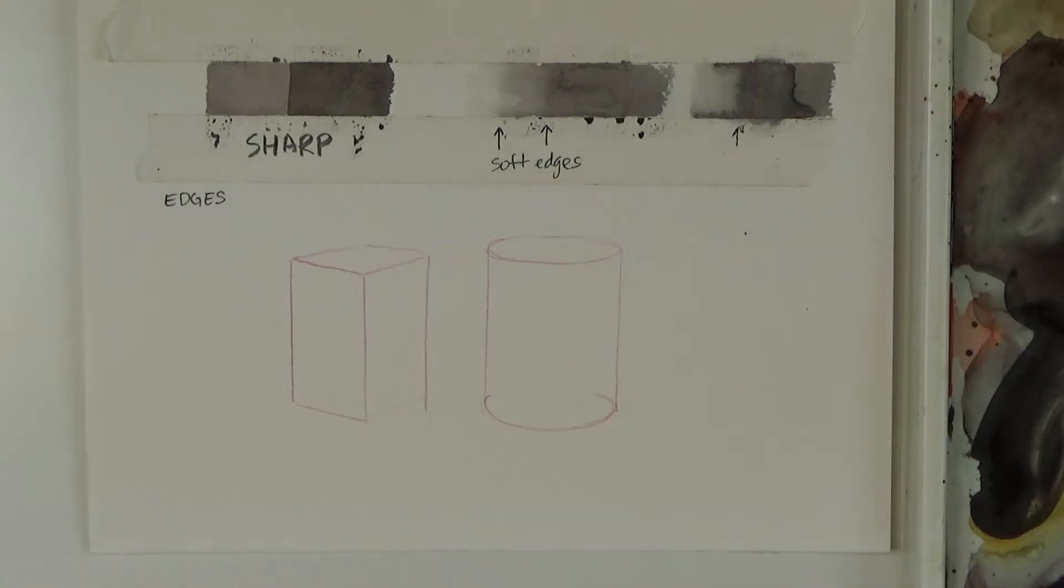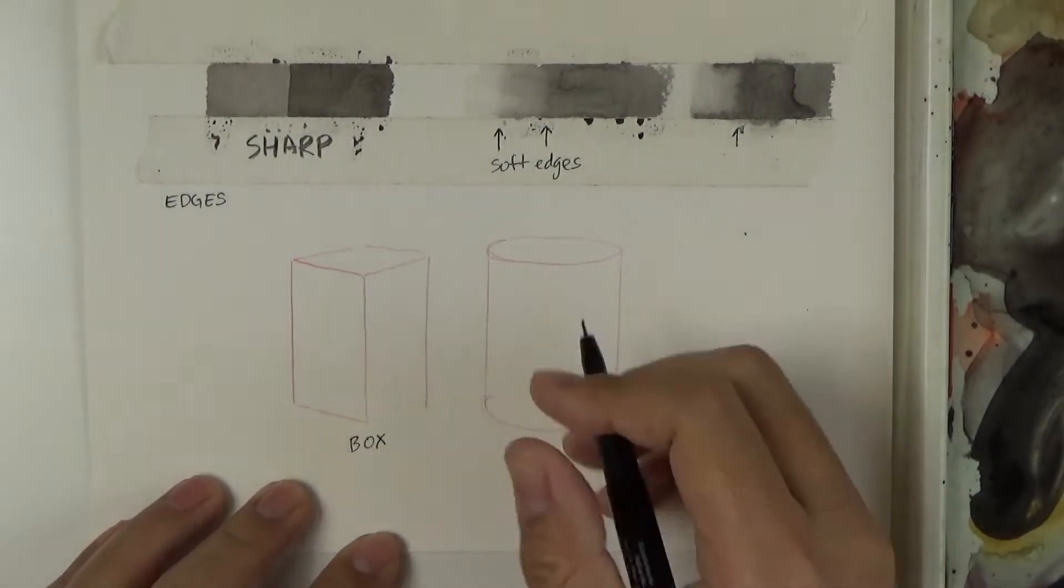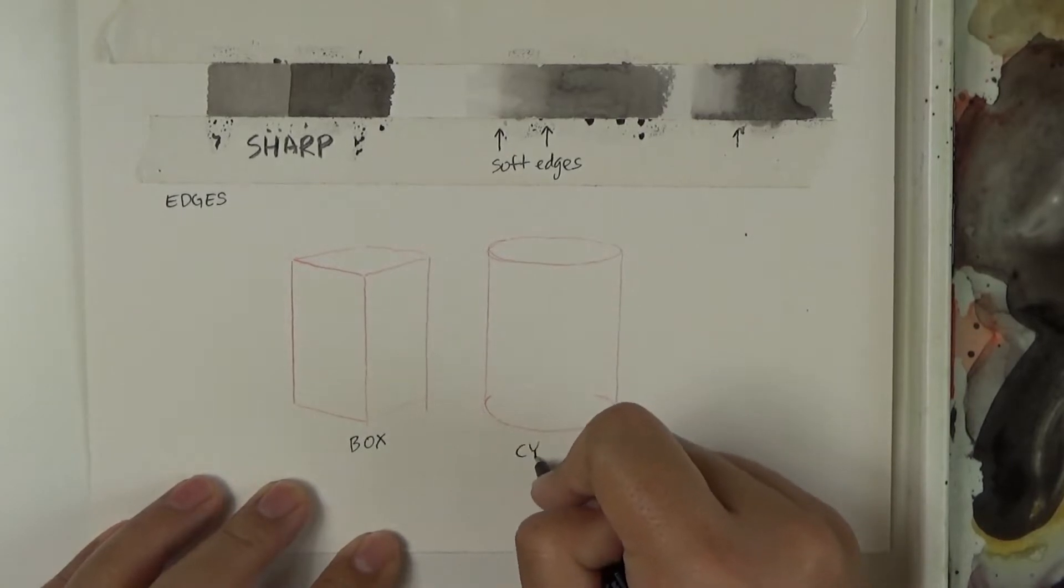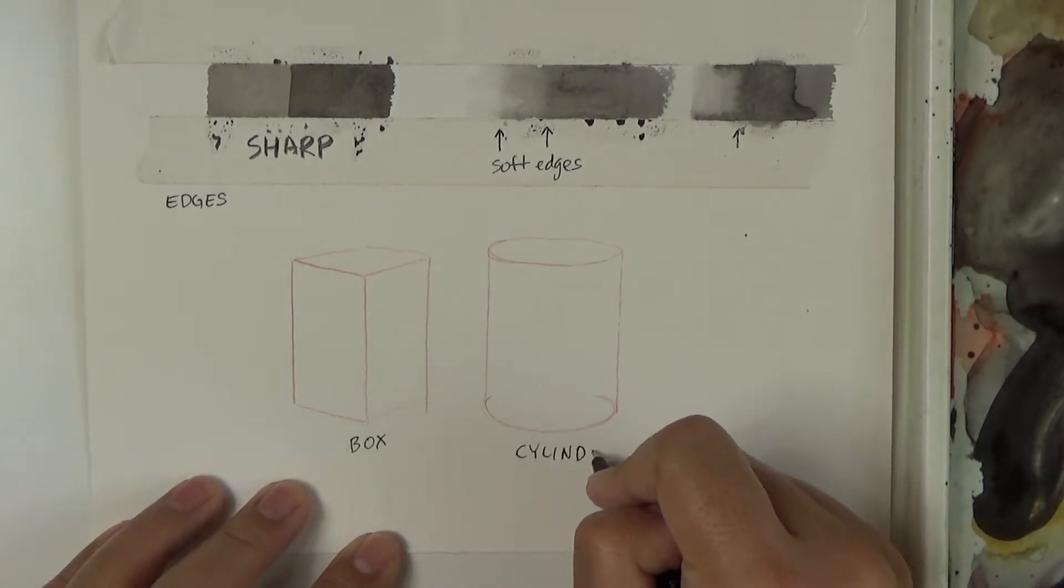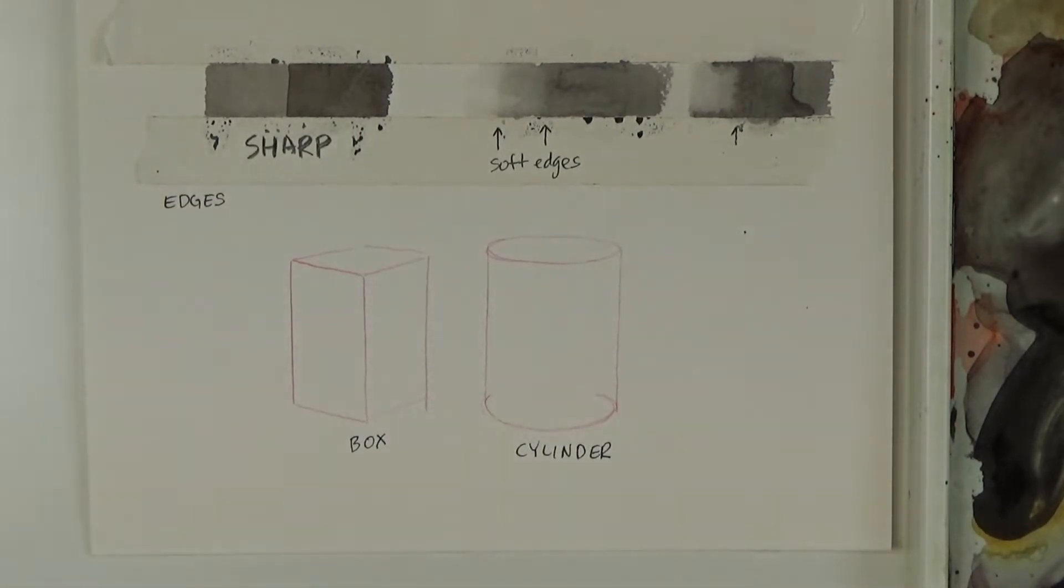So let's apply some of these edges to two objects. I have with me a box form and a cylinder form. And the way you treat the edge between both are going to be very different.